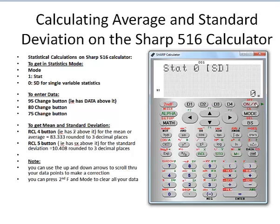I can then clear the screen, and if I want, I can cursor up or down to see my data points. So there's my 95, my 80, and my 75.